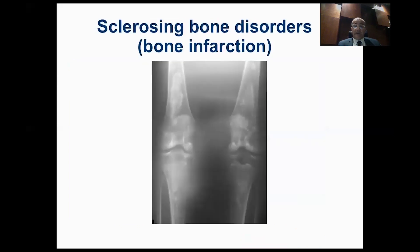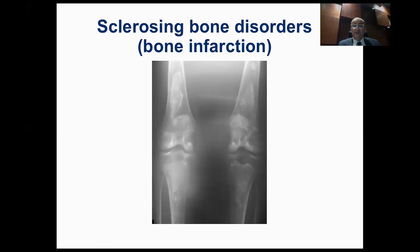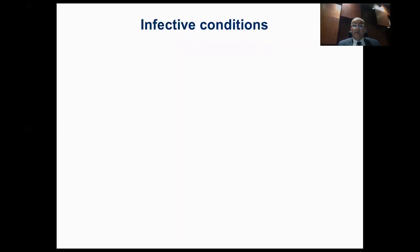This X-ray shows multiple lesions in the distal femur and proximal tibia — bone-forming lesions. Bone inside bone is always alarming and you might suspect a bone-forming tumor or sclerotic metastasis. However, looking carefully, the lesions have a very well-defined and clear outline; the multiplicity and pattern suggest these are bone infarcts.